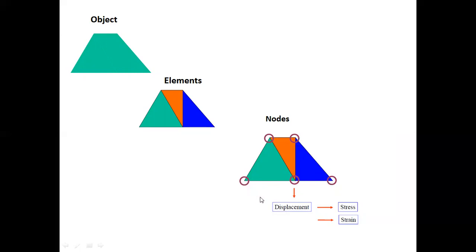You can find stress and strain at the nodes, giving you the nodal solution. If stress, strain, or displacement is calculated at the element level, it gives the elemental solution. In FEA, you get both the nodal solution and the elemental solution. Discretization converts the object into elements and nodes, with each element connected to other elements at the nodal points.